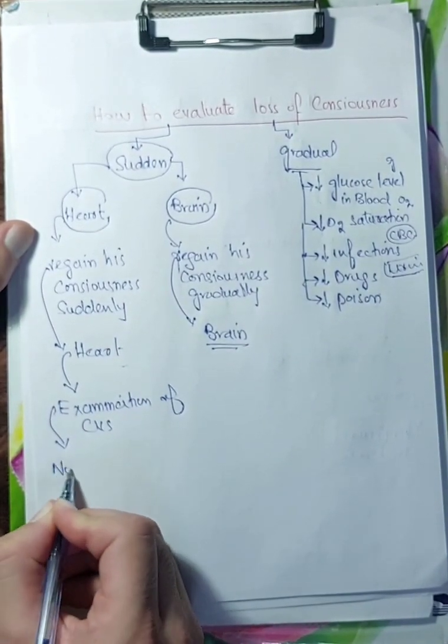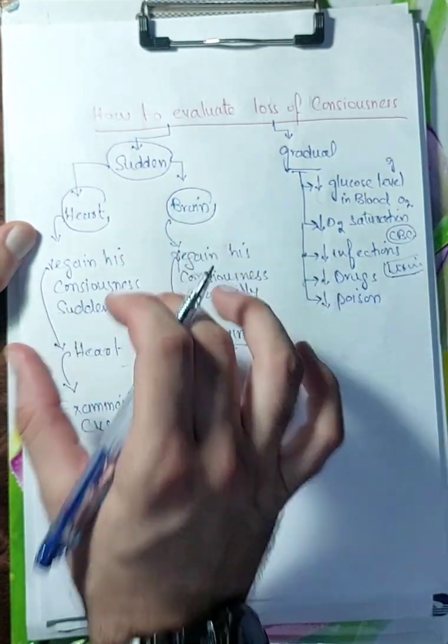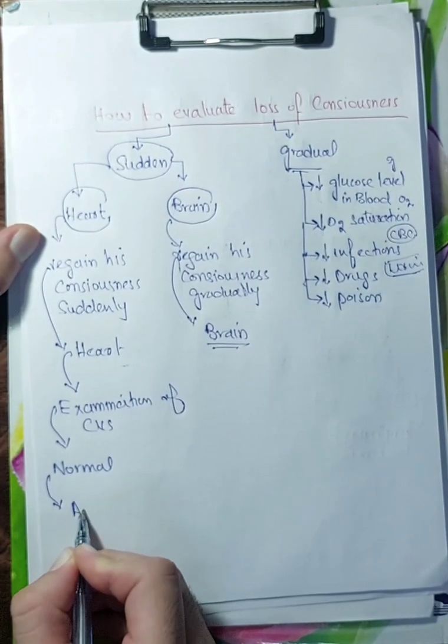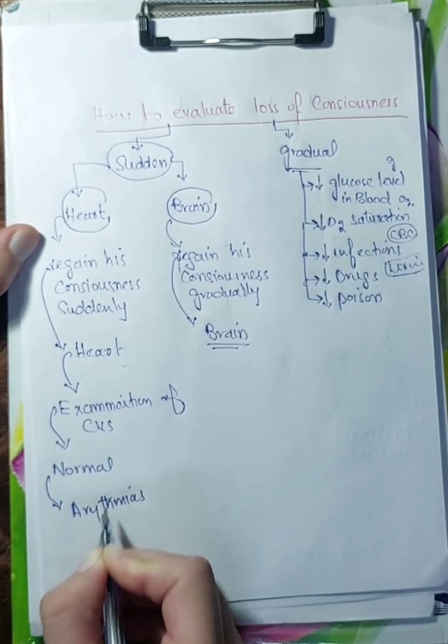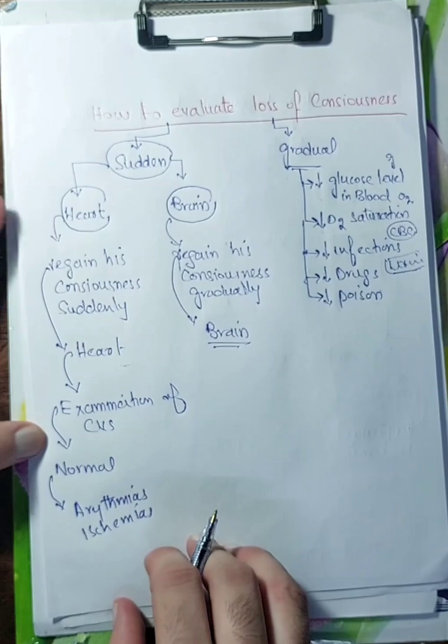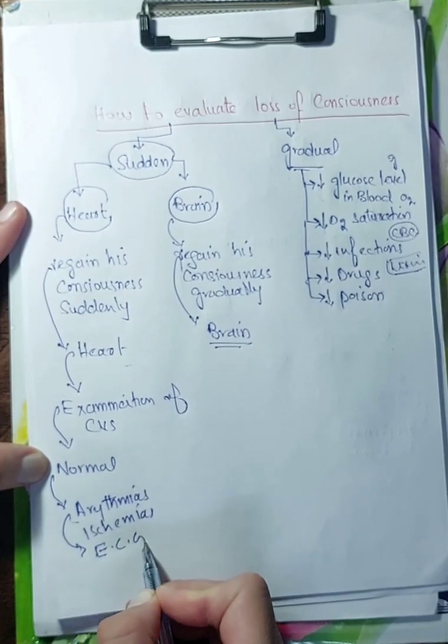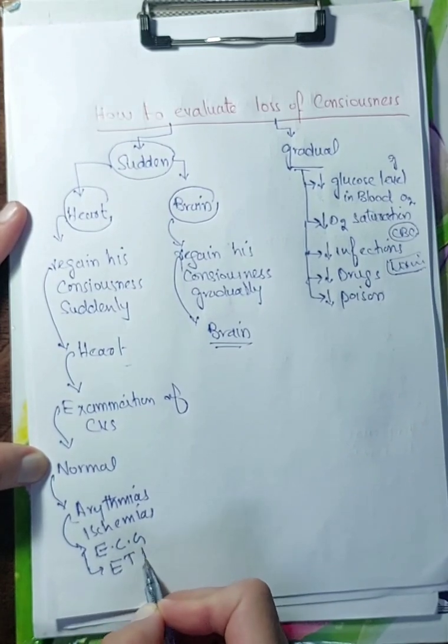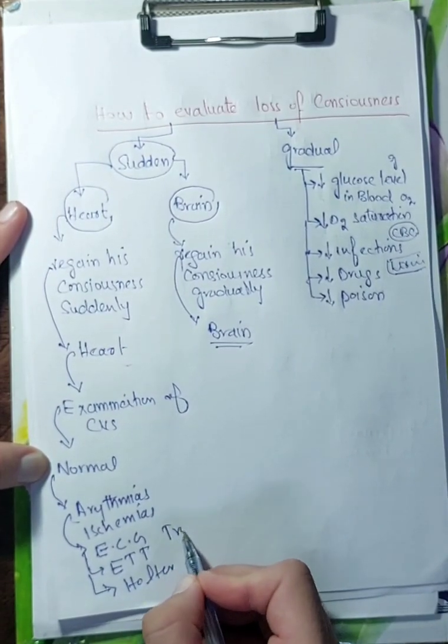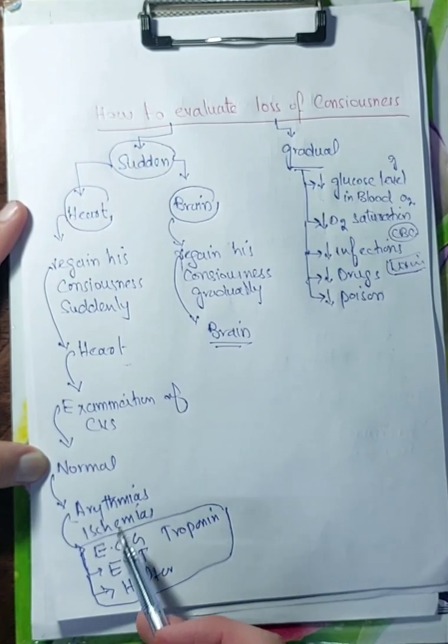If the examination is normal, you didn't find any sort of finding on examination, but you took the history and the history showing this, you will rule out arrhythmias and ischemia because sometimes you will not be able to find findings on examination. You will do ECG, ETT, I will explain it later what it means in next lecture, or halter test, or troponin. These four tests you can do for normal examination of cardiovascular to rule out these causes.